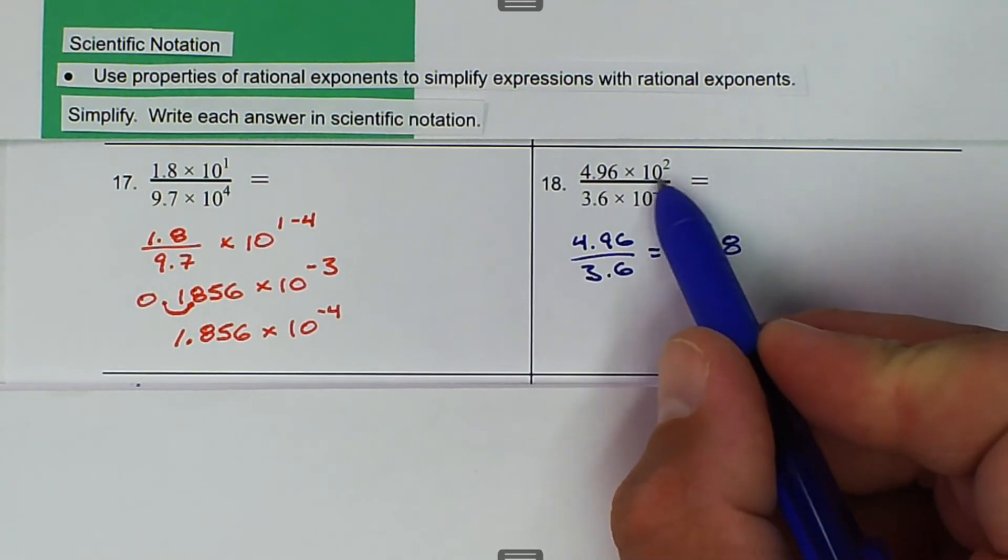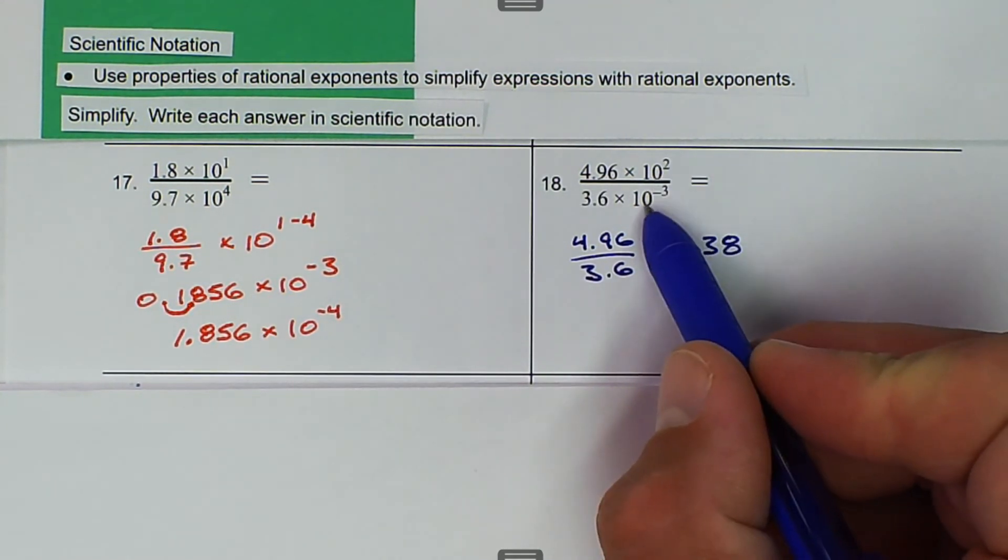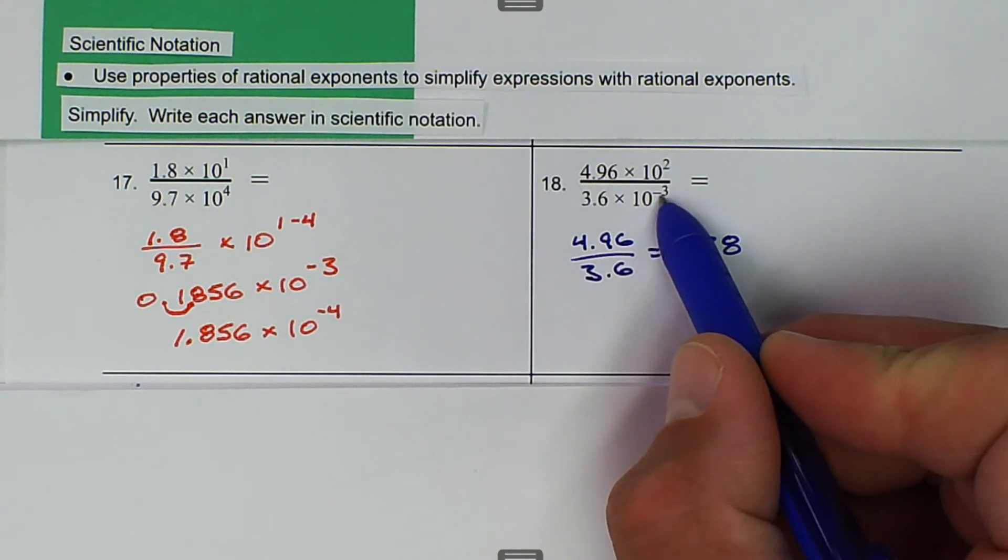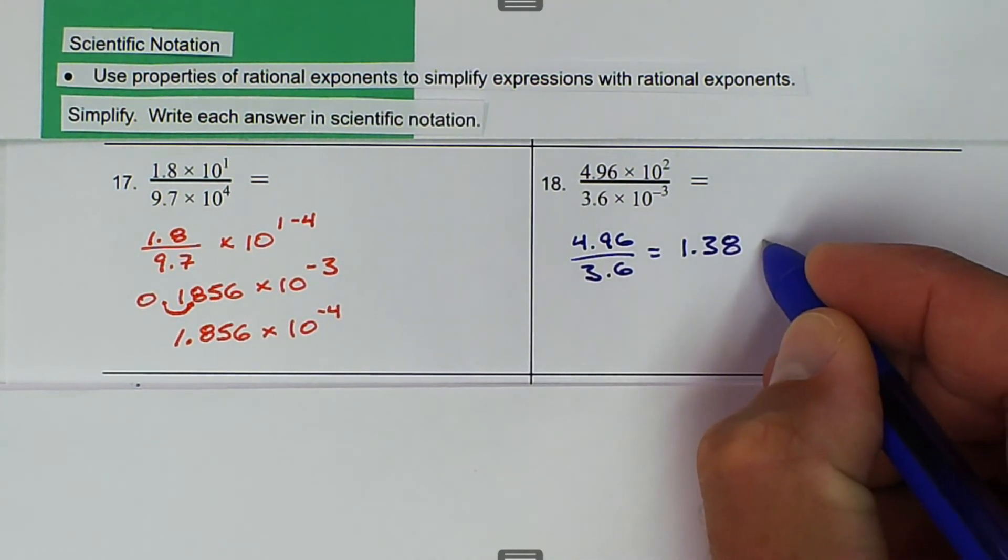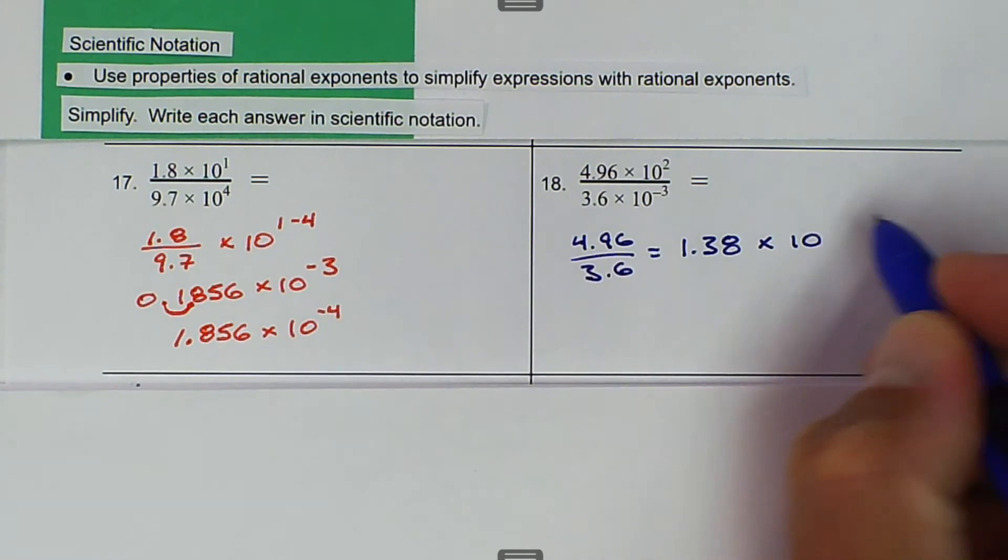Because we have the same base, 10^2 and 10^(-3), we're going to multiply it by 10. Since it's division, we use subtraction: 2 minus negative 3.